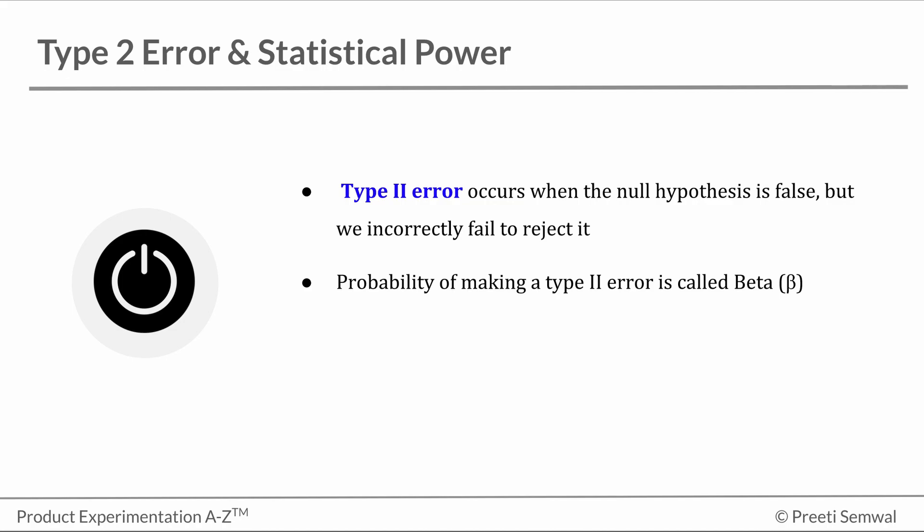The probability of making a type 2 error is called beta. The probability of correctly rejecting the null hypothesis is equal to 1 minus beta, and this is called power.